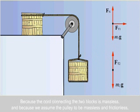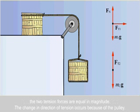Because the cord connecting the two blocks is massless, and because we assume the pulley to be massless and frictionless, the two tension forces are equal in magnitude. The change in direction of tension occurs because of the pulley.